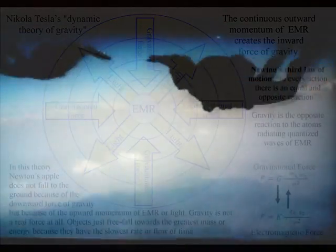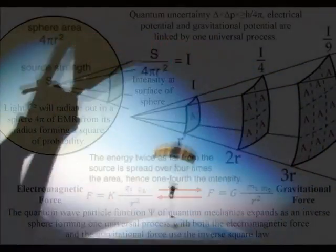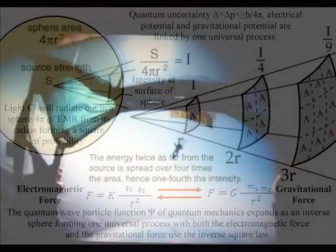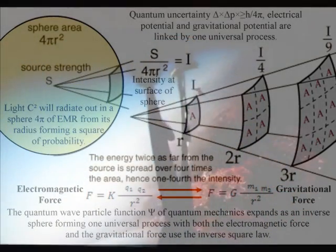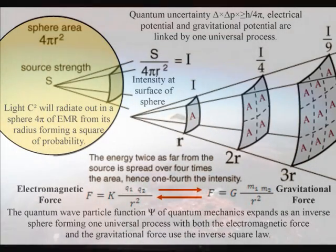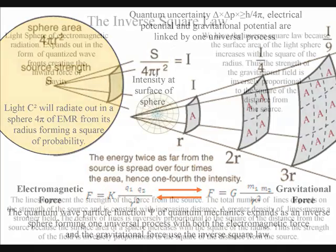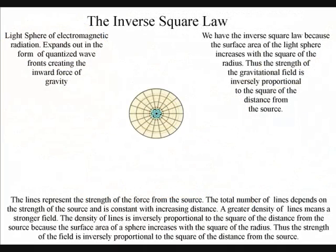I believe this can be seen in the mathematics, with both the gravitational force and the electromagnetic force having the inverse square law. We have the inverse square law because the surface area of the light sphere increases with the square of the radius, thus the strength of the gravitational field is inversely proportional to the square of the distance from the source.